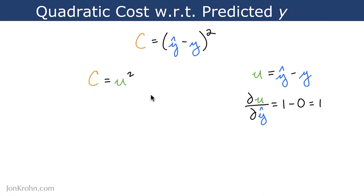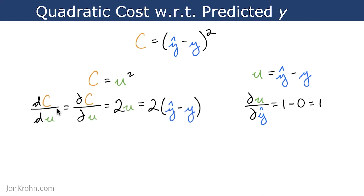The other partial derivative on this slide is del c del u. As it happens, this is actually a full derivative because there are no other variables — it's a univariate function. According to the power rule, u to the power of two becomes two times u to the power of one, which simplifies to 2u. Now that we have 2u, we can bring our nested function back into the picture, y-hat minus y, and substitute that in for u. So del c del u is equal to 2 times y-hat minus y. Now we can chain del c del u and del u del y-hat together — the del u's cancel out, leaving us with del c del y-hat.